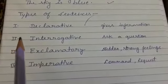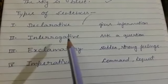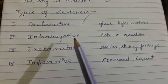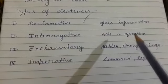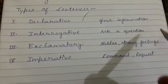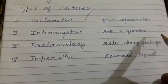Now, the second type of sentence is interrogative sentences. In interrogative sentences, we ask a question. And at the end of such type of questions, we always put a question mark.